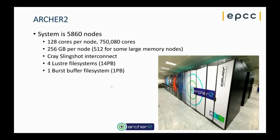No system would be functional without somewhere to store data, so we have a bunch of file systems. Of particular interest are four parallel file systems using Lustre, where we store most of our data. There's also a burst buffer file system. If you have applications that are very I/O intensive and that's a bottleneck for you, optimizing your use of the Lustre file systems or considering the burst buffer — which is faster in some circumstances — may be one way to optimize your application.